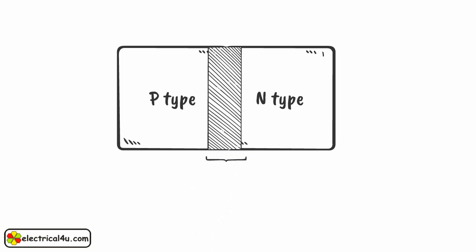Let us say the width of the depletion region is 200 Armstrong, which is very small.